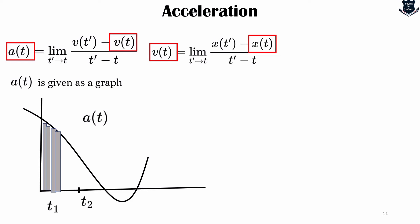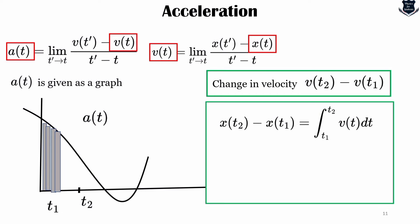It follows that if v(t) is given as a graph, then the slope of the graph is a(t). If a(t) is given as a graph, then the area under the portion of the graph between time t1 and t2 is equal to the change in velocity, which is v(t2) minus v(t1).